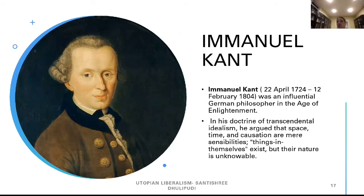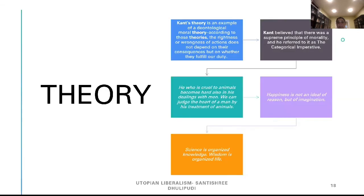After Locke, we have Immanuel Kant, the German philosopher, who was very influential, 1724 to 1804, in the Age of Enlightenment. In his doctrine of transcendental idealism, he argued that space, time, and position are mere sensibilities. Things in themselves exist, but their knowledge is unmovable.